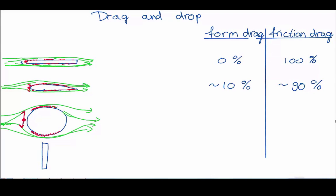So we like to estimate this by about 90% form drag, because there is a big area that it has to move and about 10% friction drag. There is not much surface area.